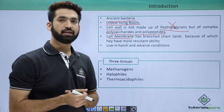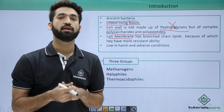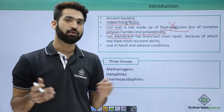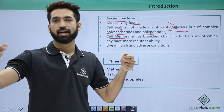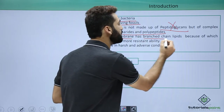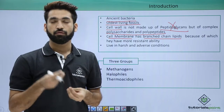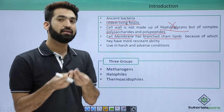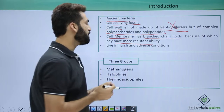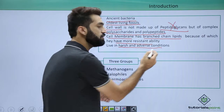The second major difference is at the level of the cell membrane. In most organisms, the cell membrane is lipoproteinaceous — made up of lipids and proteins — where the lipids are arranged in simple chains. However, in Archaebacteria, the lipids have branched chains. This branching gives them greater resistance and allows them to survive in harsh and adverse conditions.